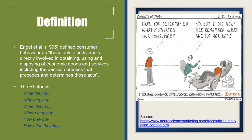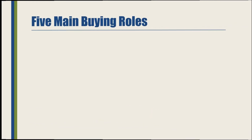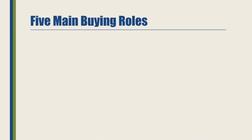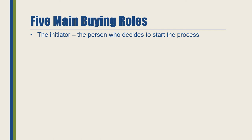Once these questions are answered, it becomes easy for marketers to identify what type of consumers they can attract, so that their products and services help those consumers with their wants, needs, or desires. Now, there are five main buying roles. The first one is the initiator — the person who decides to start the decision-making process.